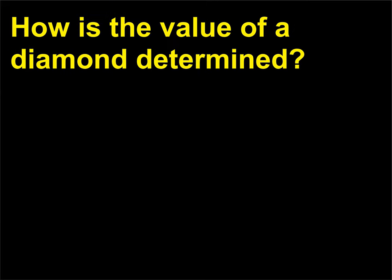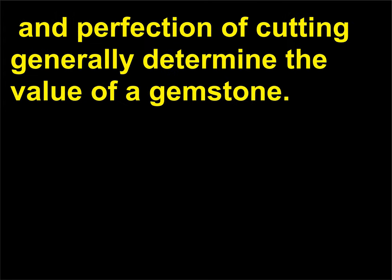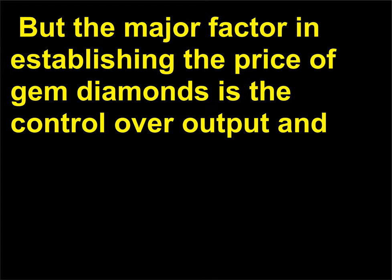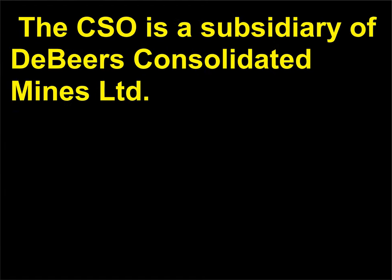How is the value of a diamond determined? Demand, beauty, durability, rarity, freedom from defects, and perfection of cutting generally determine the value of a gemstone. But the major factor in establishing the price of gem diamonds is the control over output and price as exercised by the Central Selling Organizations (CSO), Diamond Trading Corporation Ltd. The CSO is a subsidiary of De Beers Consolidated Mines Ltd.